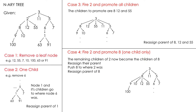In this lesson we'll be looking at deleting a node from an N-ary tree. Questions in the past on LeetCode and on YouTube have covered deleting a node from a binary search tree, but this case is more complex because the nodes are not in any particular order and each node can have any number of children. For example, node 2 has children 8, 12, and 55, so this is an N-ary tree.